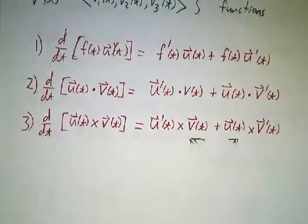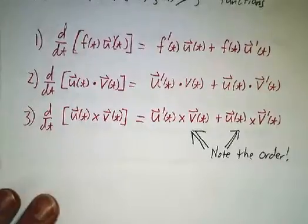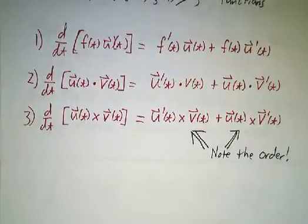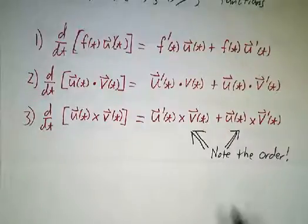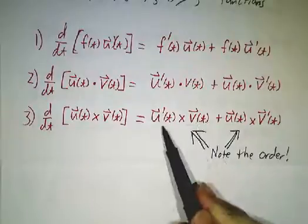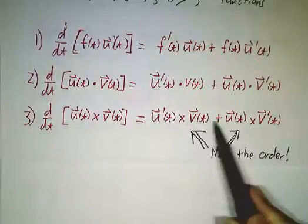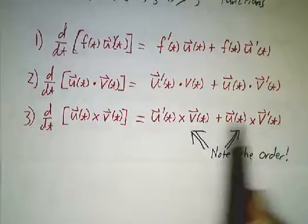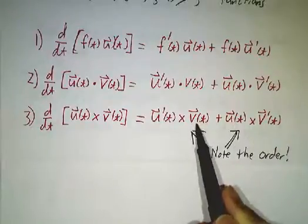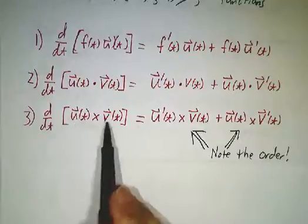The tricky thing is to remember to keep the order of the vectors. When doing the product rule for scalars, you might write the derivative of u times v as u times the derivative of v, plus v times the derivative of u. You never want to write v times the derivative of u here. It should be the derivative of u times v, plus u times the derivative of v — the u comes first, the v comes second, because in the original product, u came first and v came second.